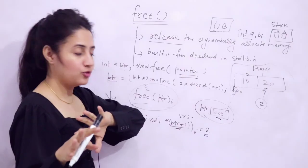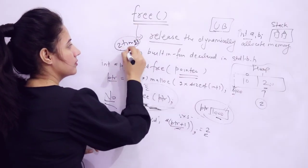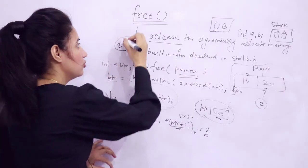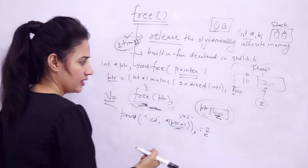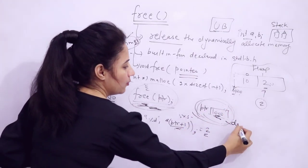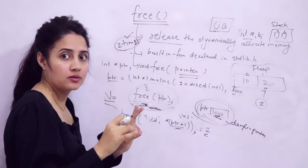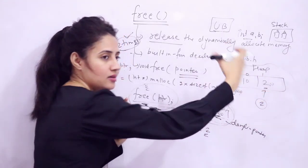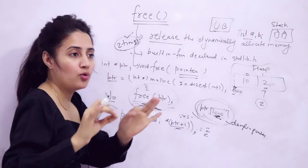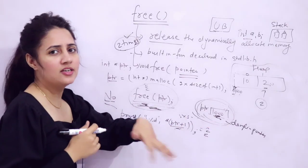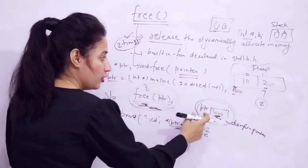It's your assignment to write a program that uses the free function at least two times. After using free(ptr), ptr still contains address 1000, making it a dangling pointer — it points to a non-existing memory location. That's why it's a dangling pointer, and if you dereference it, it will show undefined behavior. Better practice is to reinitialize the pointer by assigning ptr = NULL after freeing.